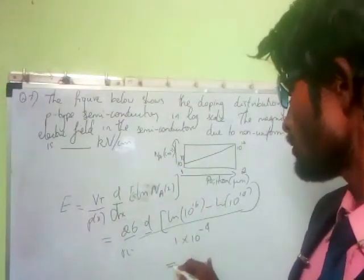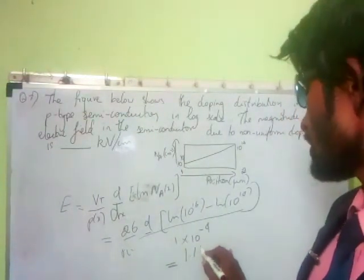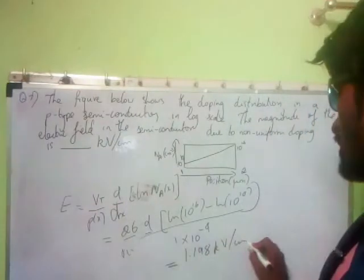When you solve everything, you will get the answer of 1.198 kilo ohm per centimeter.